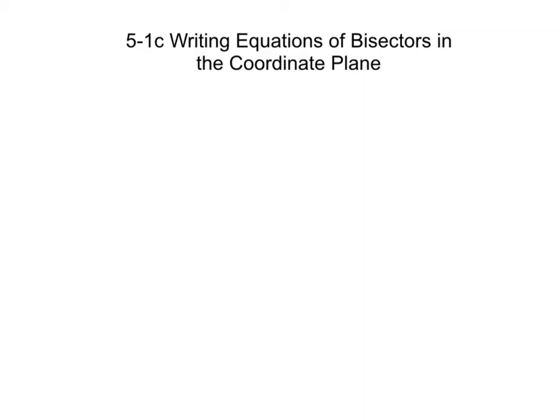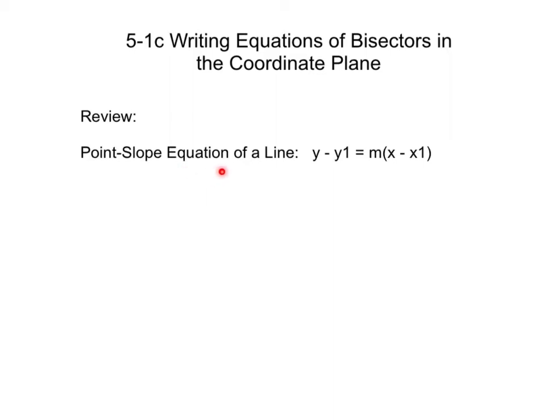Before we actually get started, there's a few things we need to review. The first of which is the point-slope equation of a line, and that is y minus y sub 1 is equal to m times the quantity of x minus x sub 1.